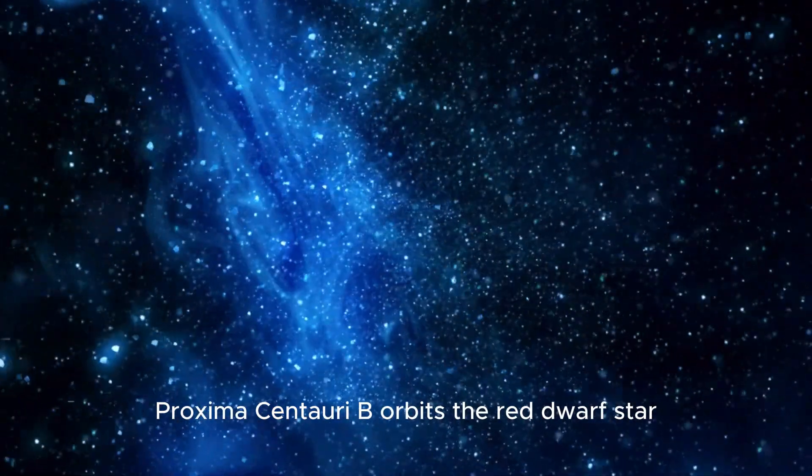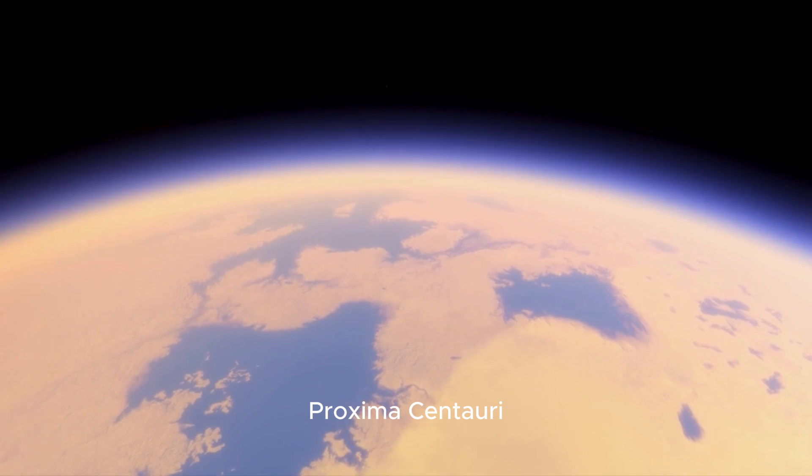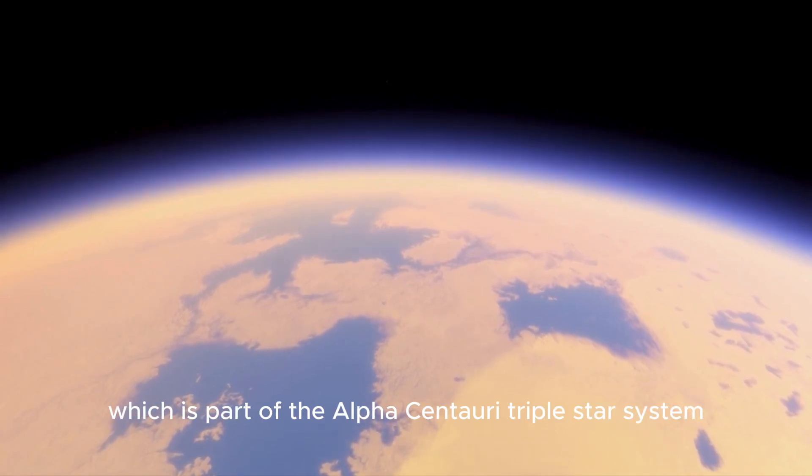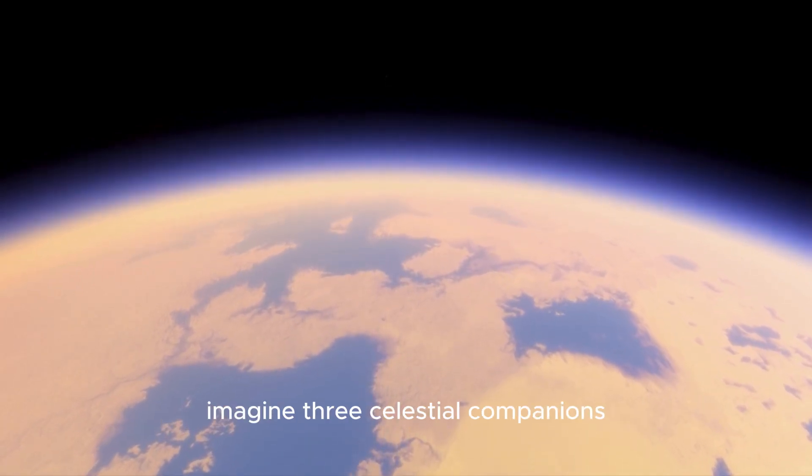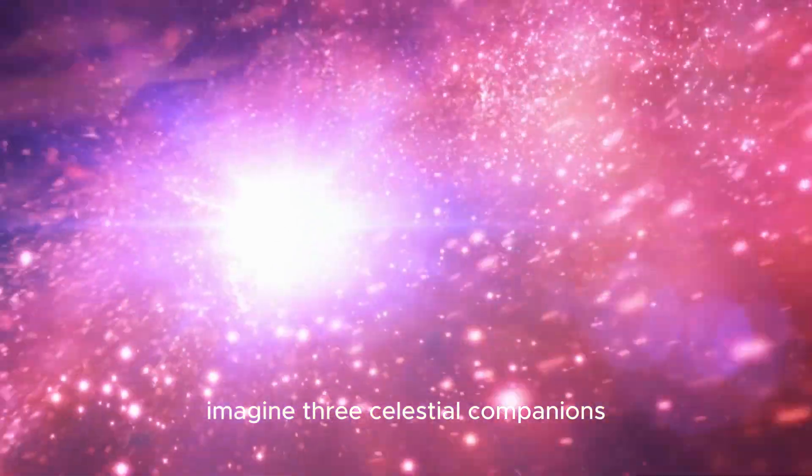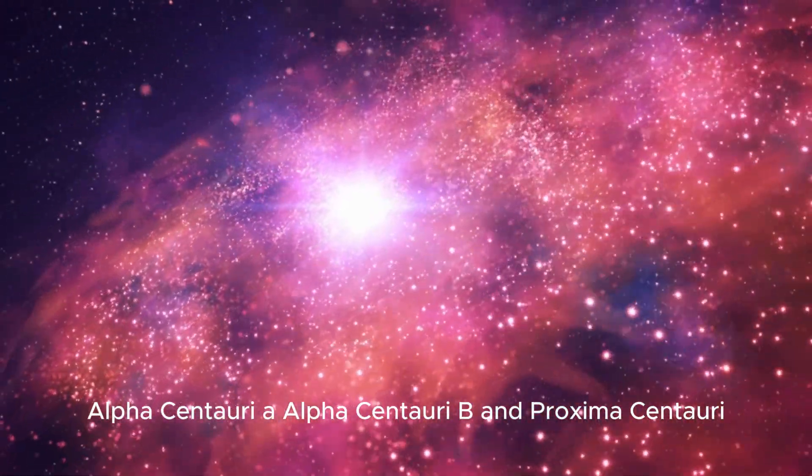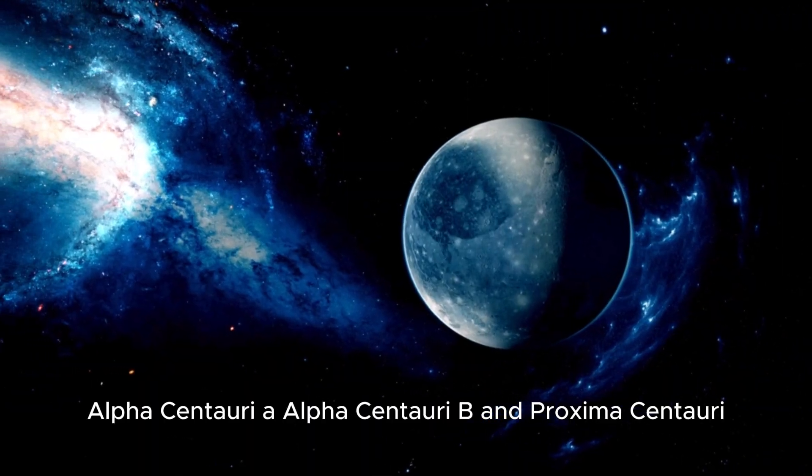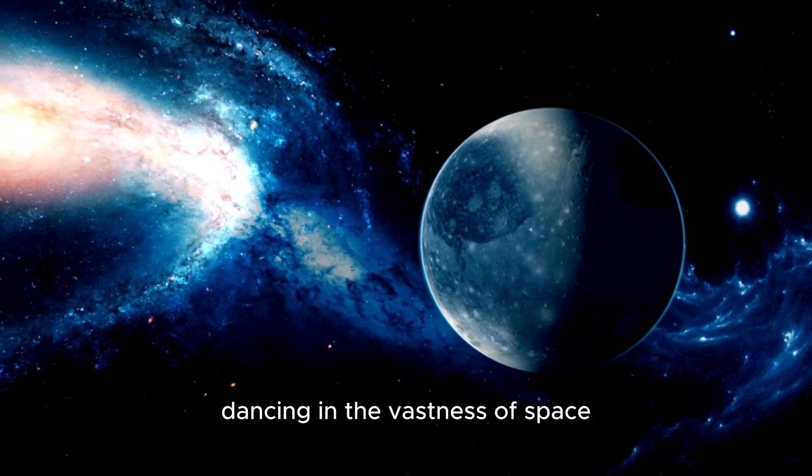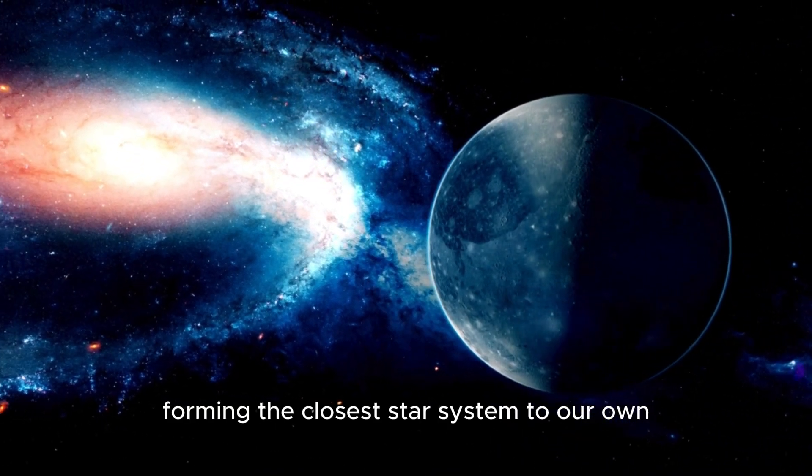Proxima Centauri b orbits the red dwarf star Proxima Centauri, which is part of the Alpha Centauri triple star system. Imagine three celestial companions—Alpha Centauri a, Alpha Centauri b, and Proxima Centauri—dancing in the vastness of space, forming the closest star system to our own.